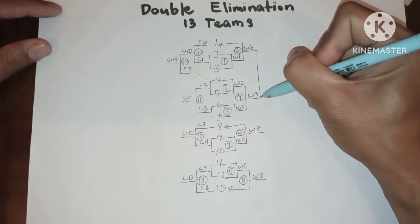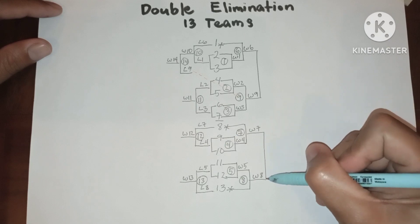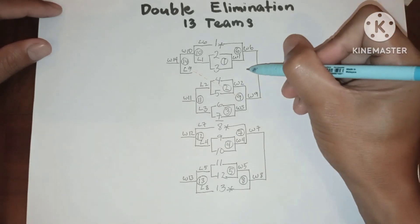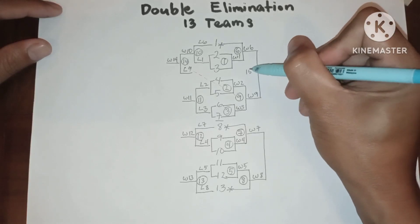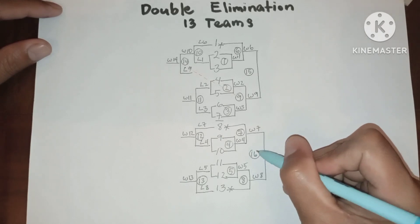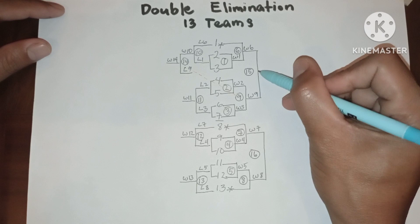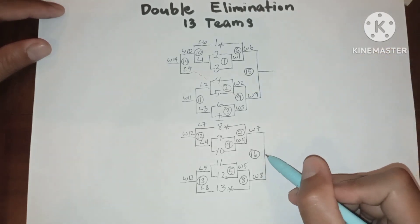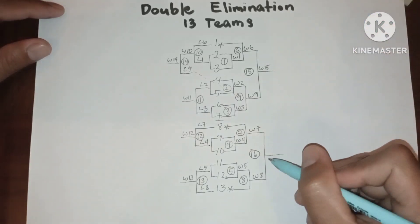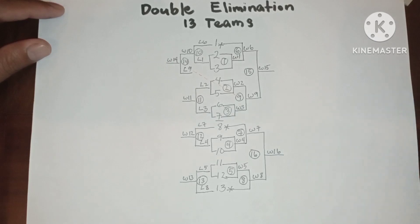So winner 6 will be playing against winner 9, and winner 7 will play against winner 8. This will be game 15 and game 16. Let us have the result: winner 15, winner 16.